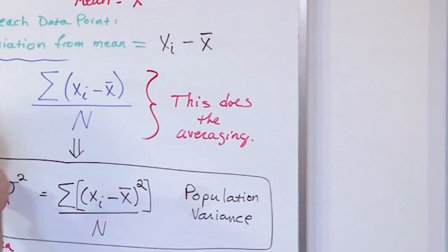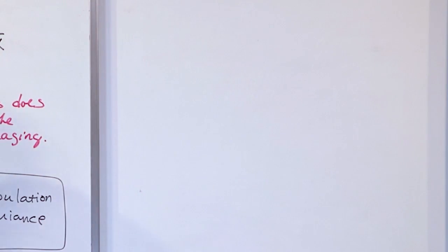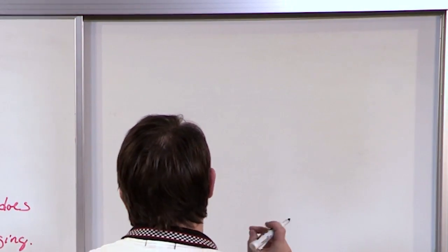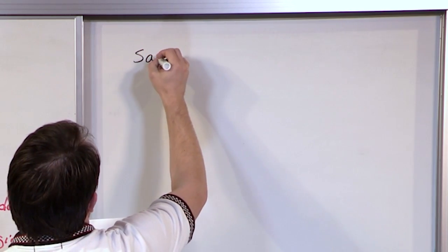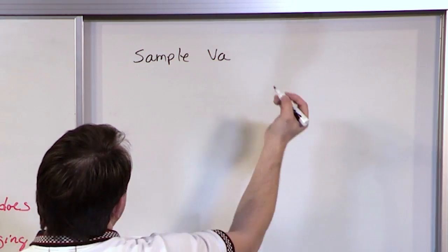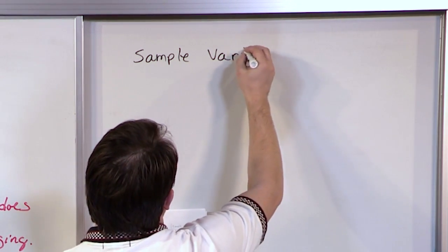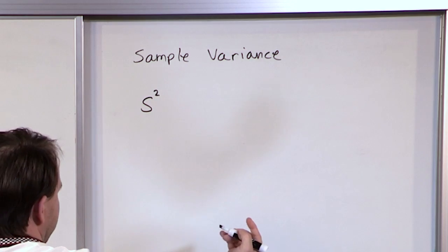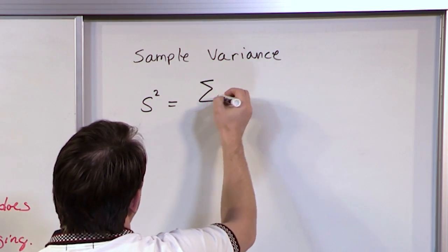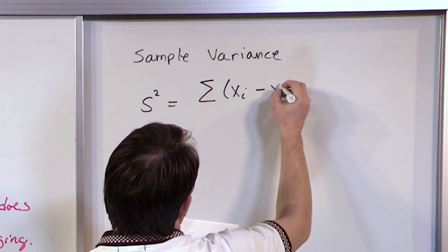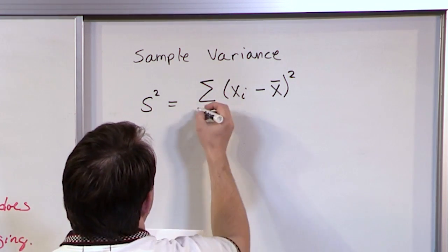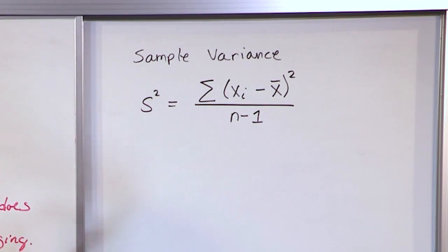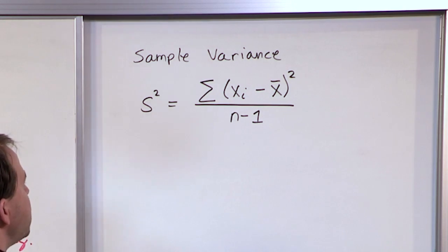This is a population variance, meaning it covers all data points in the population. But in practice, we take samples, so we use the sample variance, denoted s squared. The formula is the same — sum of (X sub i minus x-bar) squared — but divided by n minus 1 instead of N. The minus 1 is a convention; the detailed reason goes beyond the scope of this class.